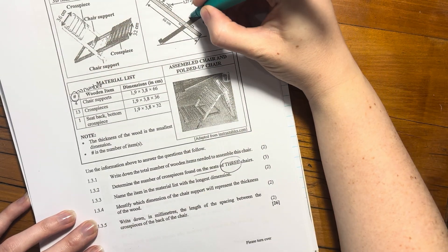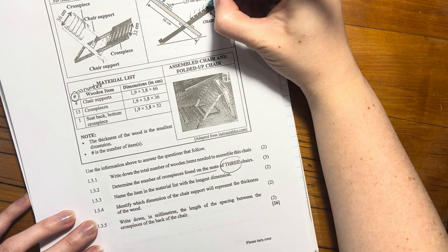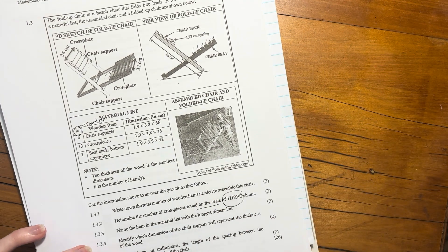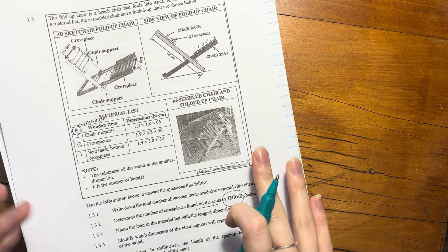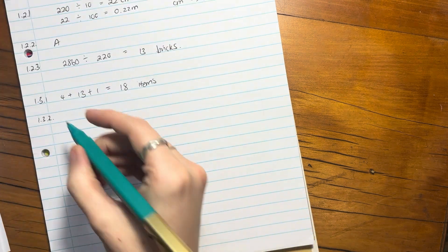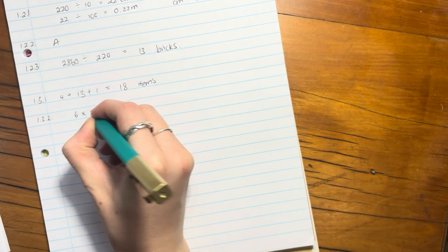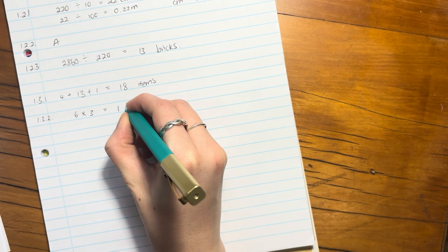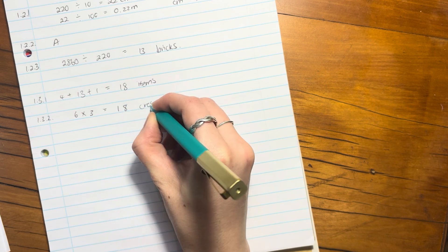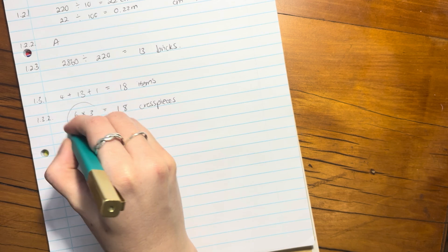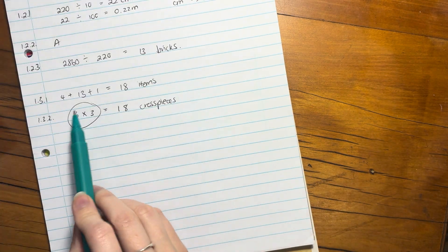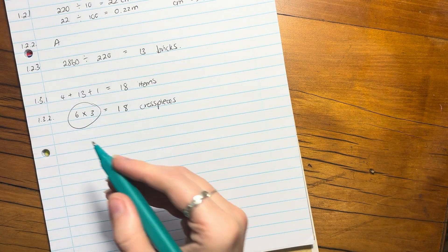So let's count here. It's probably easier to look here. One, two, three, four, five, six. I need six cross pieces for one chair, but then I need to times that by three because I need three chairs. So you're going to say six times three means I need 18 cross pieces. And because it's a three mark question, please show this. You see it's a three mark question? Show this because they will get a mark for that.